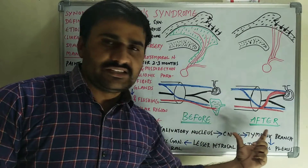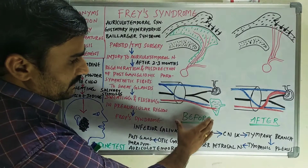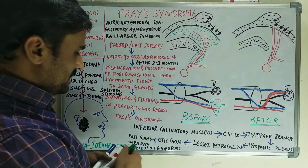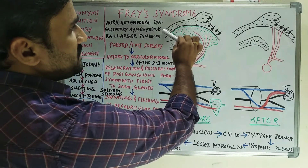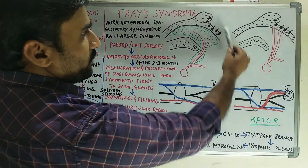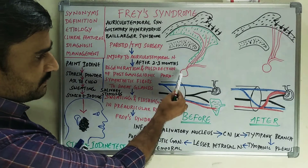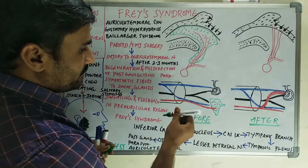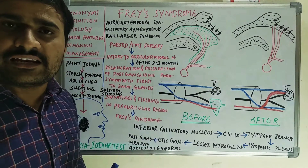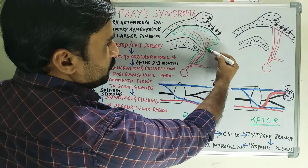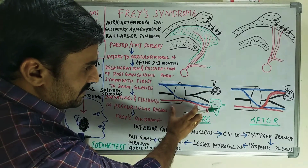This is very important for PG point of view. You can see in this diagram — this is the normal anatomy before surgery and this is after surgery. This is the cut section of the mandible, the green colored one is the parotid gland, the overlying skin on the parotid gland is the black colored one, and this is the ear. From the otic ganglion, this is the auriculotemporal nerve. The post-ganglionic fibers — these red colored ones — provide secretomotor nerve supply to the parotid gland.